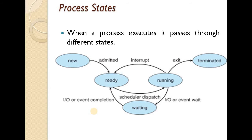There are five states of a process: new state, ready state, running state, waiting state, and terminated state. We'll see each type of state in detail.